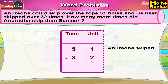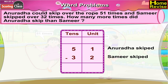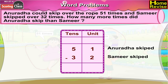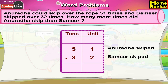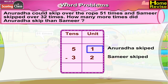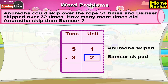Anuradha could skip over the rope 51 times and Samir skipped 32 times. In order to find how many times Anuradha skipped more than Samir, we will have to subtract 32 from 51. That is 5 tens 1 unit minus 3 tens 2 units.